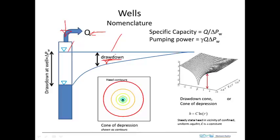Drawdown increases during pumping, typically. The region affected by pumping — where drawdown has occurred — is called the radius of influence, the distance out from the well. Under ideal conditions, if the aquifer is homogeneous and isotropic, then the radius of influence will be constant, and if you revolve it around the axis of the well, you end up with a conical-shaped depression, called a cone of depression.